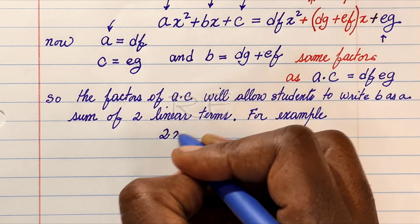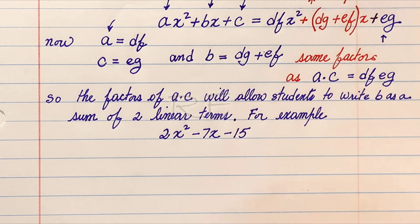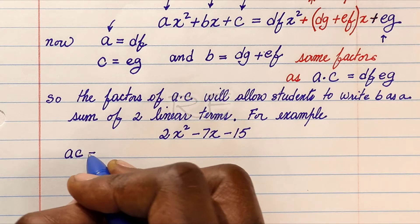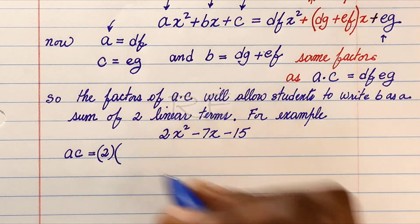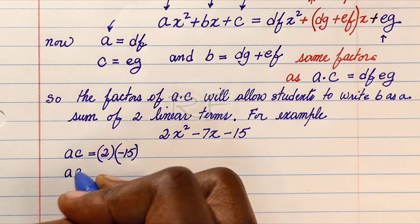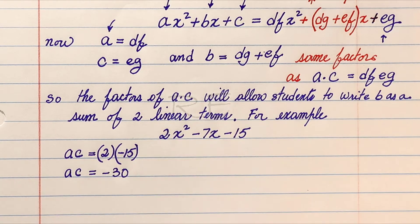An example: if we have 2x squared minus 7x minus 15 to factor, ac will be equal to 2 times negative 15, so ac will be equal to negative 30.